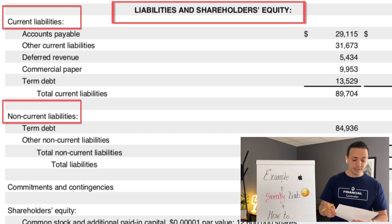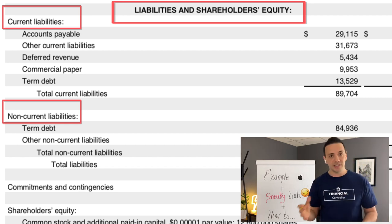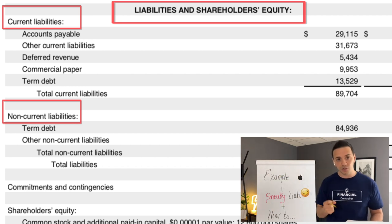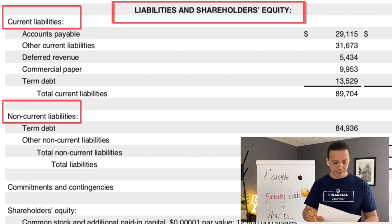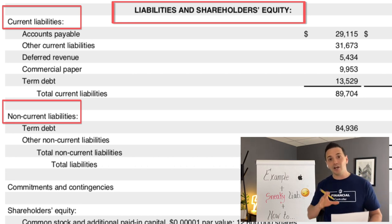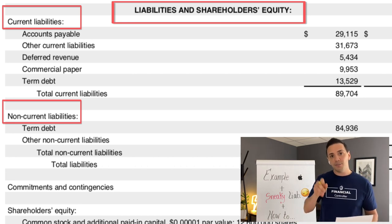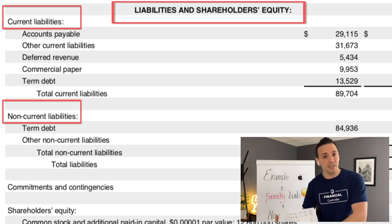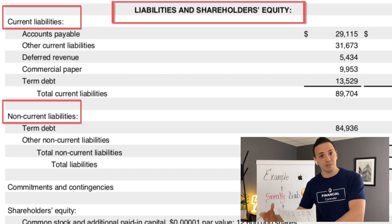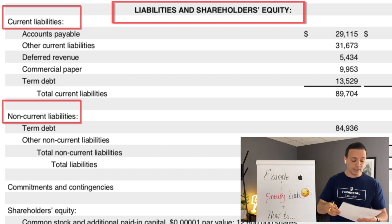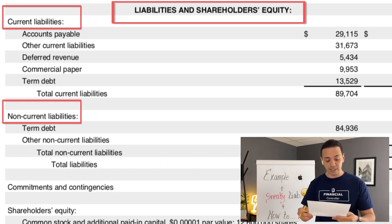For current liabilities, the first is accounts payable — self-explanatory, what you owe to vendors for supplies used to run the business. Then you have other current liabilities, most likely accrued expenses. A company records a liability for accrued expenses when the invoice hasn't been received yet — so there's no accounts payable recorded — but you still recognize the accrued liability for that expense.